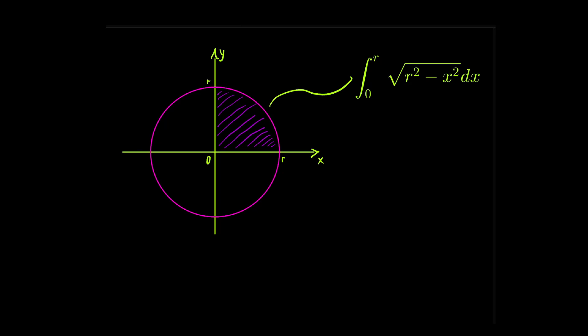So how are we going to do it? Well, first of all, how is a circle defined? A circle has a constant radius, but what is the actual definition? If we have the radius r and we square it, and we have a Cartesian coordinate system with x and y coordinates, then r squared would be equal to x squared plus y squared.